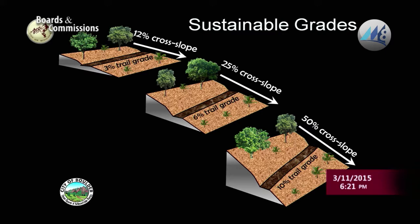Cross slope is simply the steepness of the hillside — if you drop a basketball at the top and let it roll straight down, that's the cross slope. What we strive for are trail grades that are typically one quarter to one third of the cross slope to prevent erosion. On a 12% cross slope, that means about a 3% to 4% trail grade with minimal soil erosion expected.